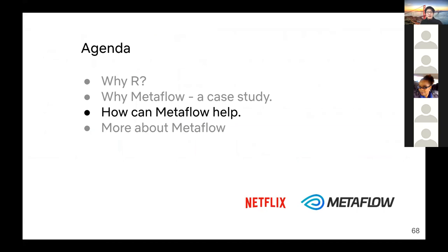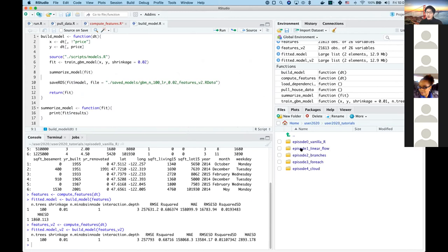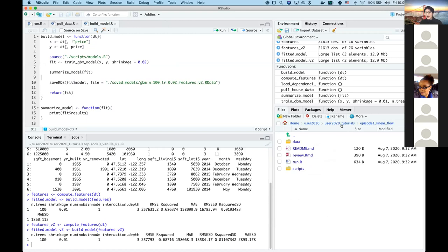That's the end of our case study and episode zero. From here we're going to start with episodes one through four, where everything is converted into Metaflow. I'll do this conversion on the fly with a demo showing how easy it is to convert a vanilla R workflow into a Metaflow workflow. If you can't follow along in both Zoom and RStudio simultaneously, don't worry — just go into the episode scripts and source them to run everything in Metaflow smoothly.